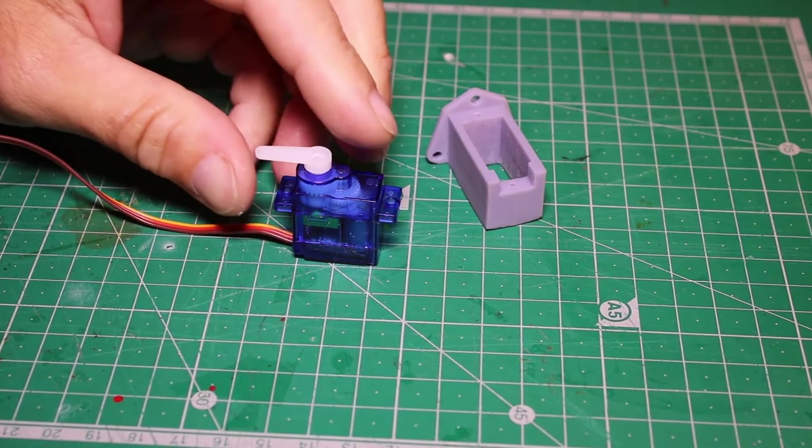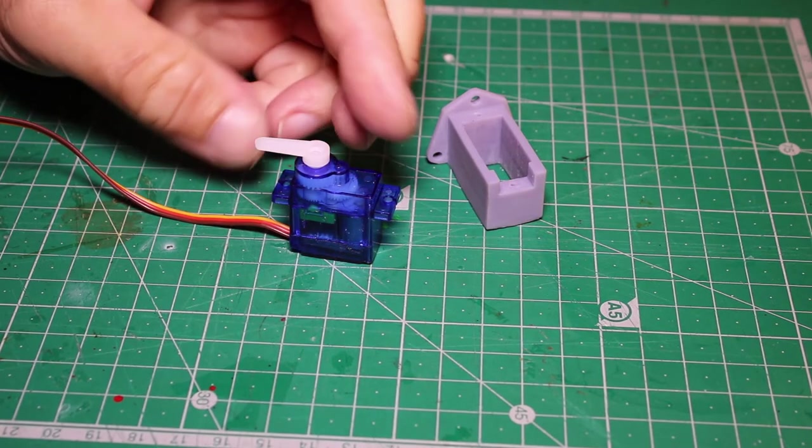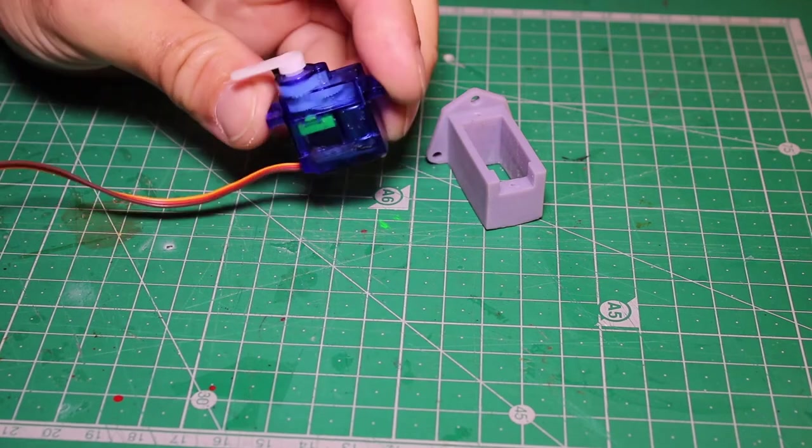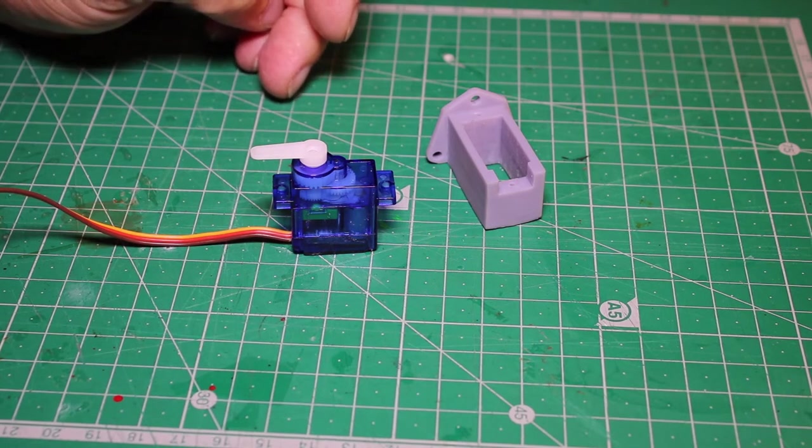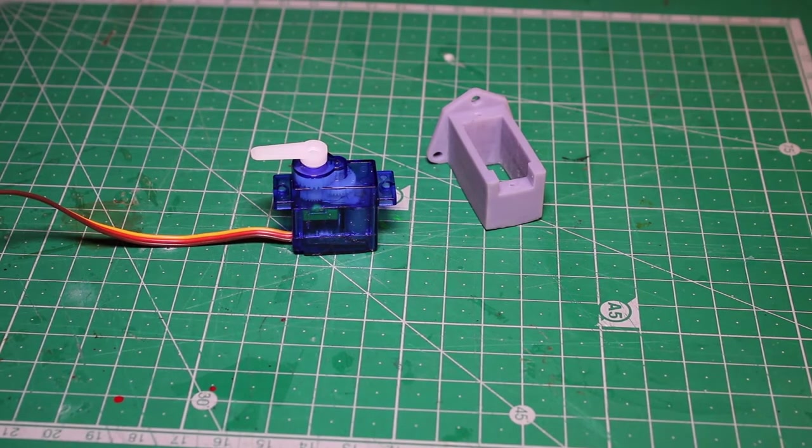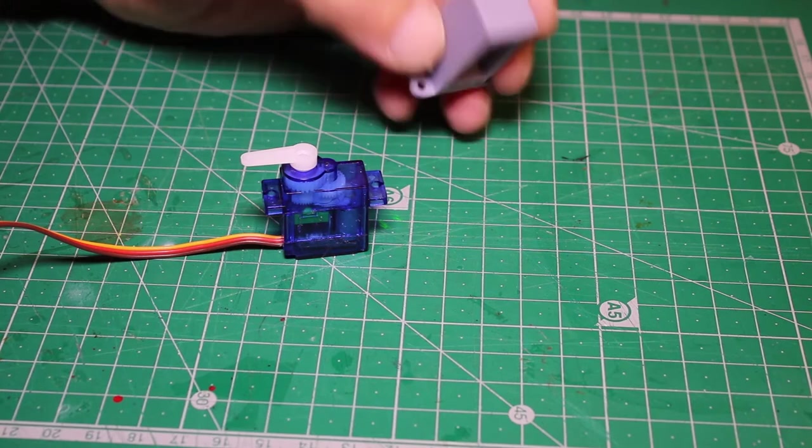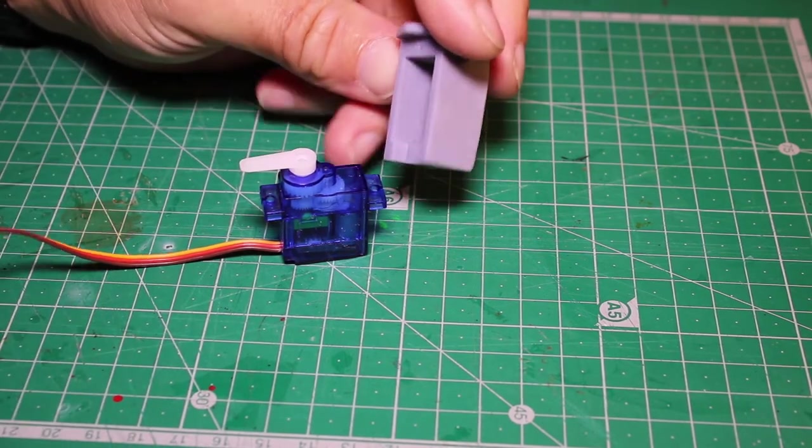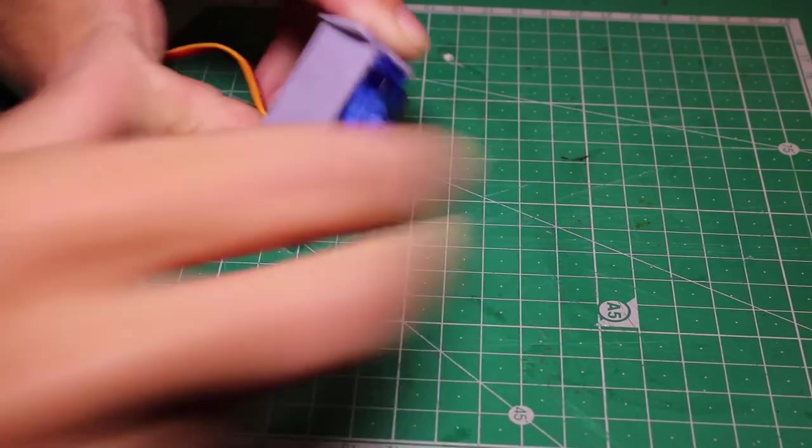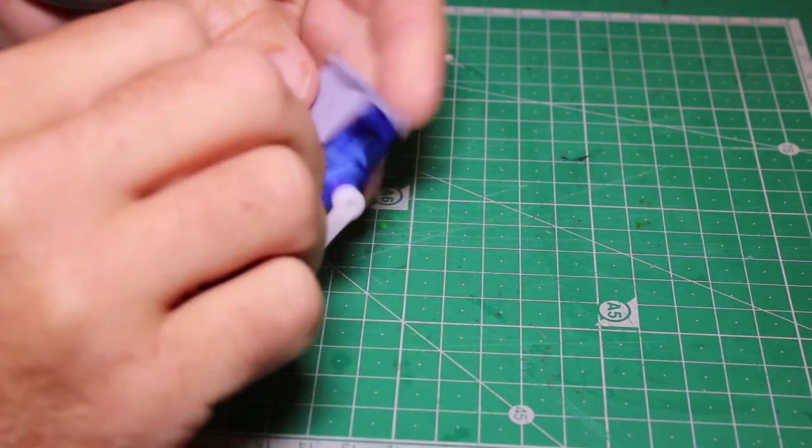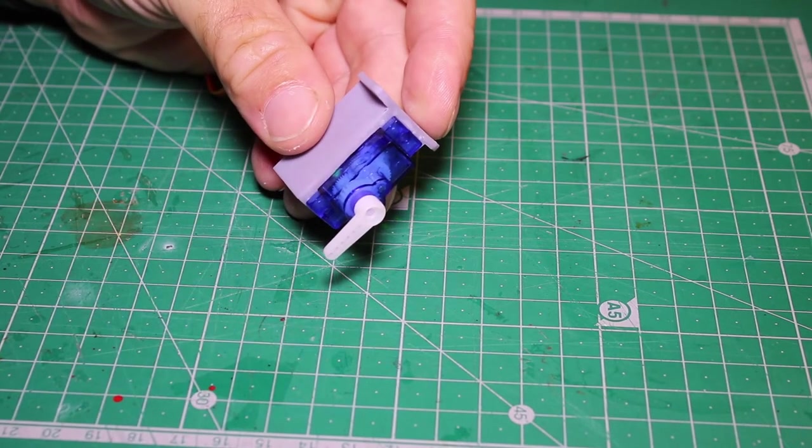On the desk in front of me here, I have a miniature servo motor. Now these are the kind of thing which is used in model aircraft to control the control surfaces. However, they're increasingly used on model railways for controlling things like points and signals. Indeed, I'm going to use four of these things to open and close the doors of the shed for Sandling Junction.